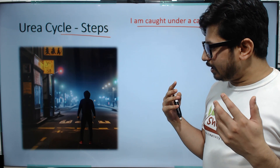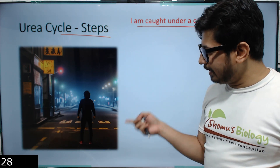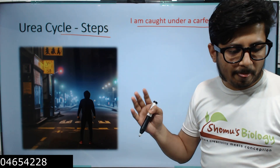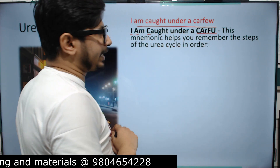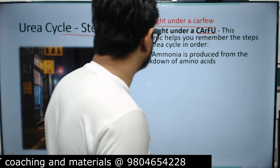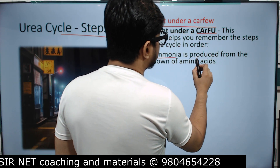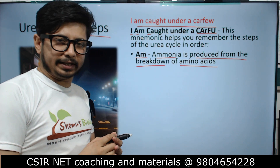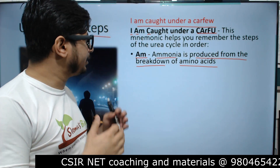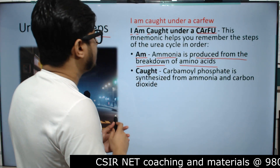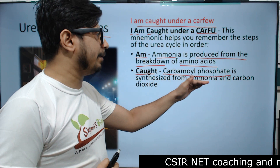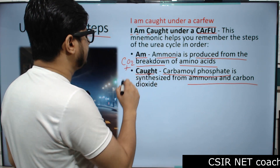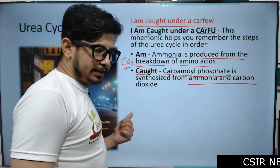Picture yourself standing on a road where a curfew is going on — nobody is there, you are alone at night. In the sentence 'I Am Caught Under A Curfew,' the capital letters represent the steps: AM stands for Ammonia, which is produced from the breakdown of amino acids — that is the beginning of the cycle.